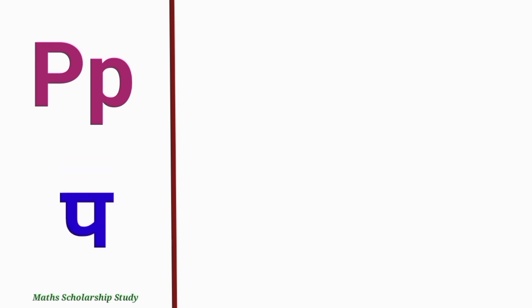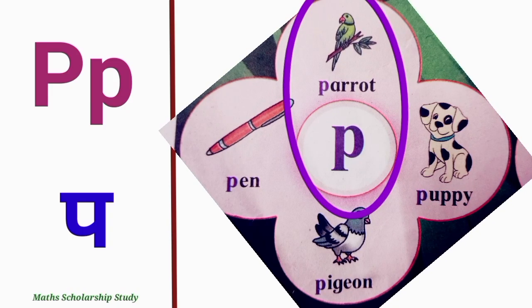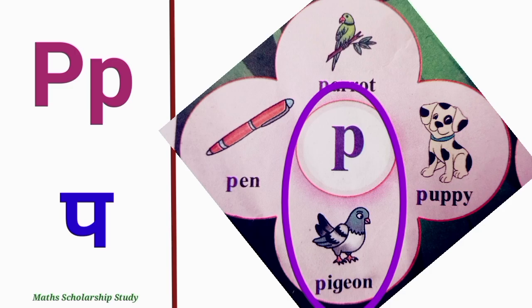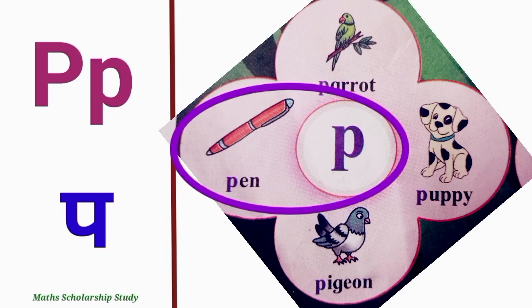Letter P. P says P. P for parrot, P for puppy, P for pigeon, P for pen.